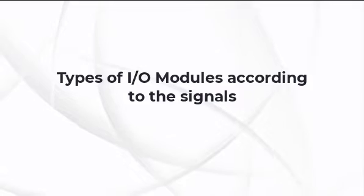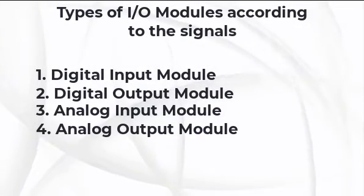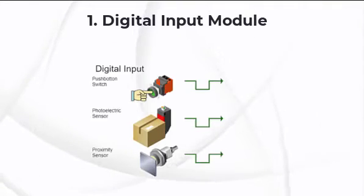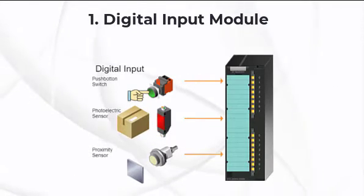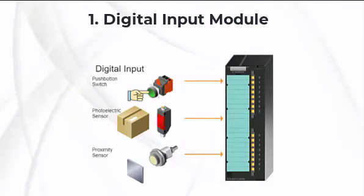Now, let's discuss the types of modules according to the signals. Signal modules have four types. Digital input module and digital output module, analog input module and analog output module. Digital input module. The modules which can read digital input and connected to the digital input devices are called digital input modules.